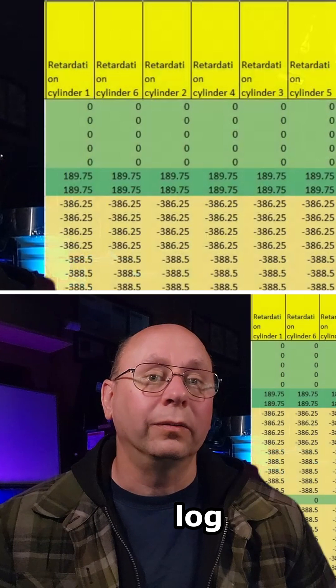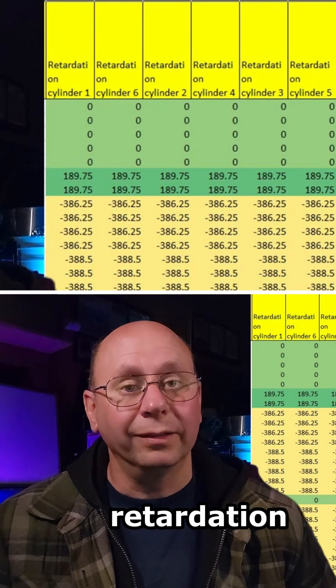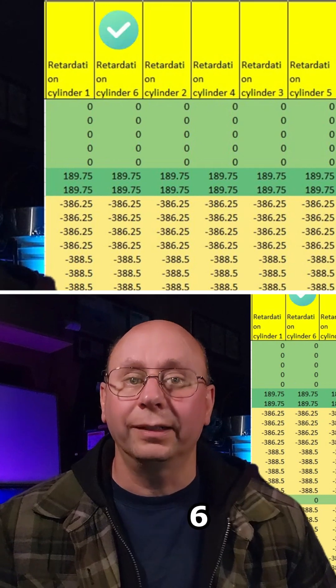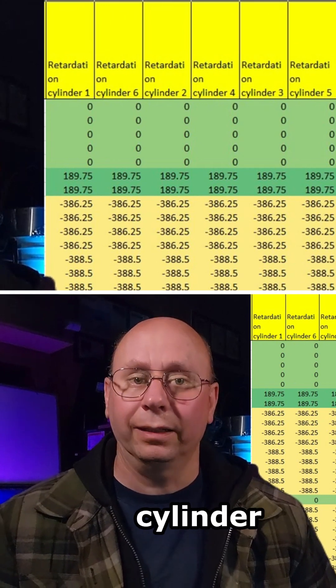Normally, you'd want to log Retardation Cylinder 1, Retardation Cylinder 2, Retardation Cylinder 3, and so on up through 6 to get individual cylinder retard for each cylinder.